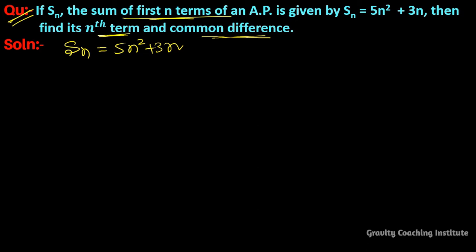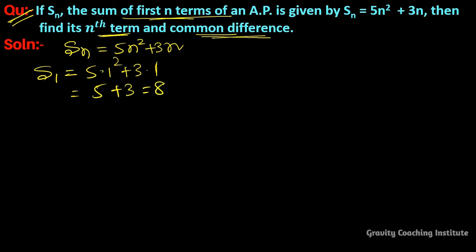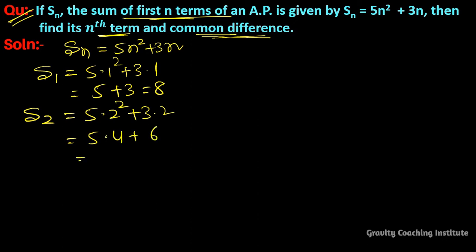Since Sn is given, we will put n equal to 1: S1 equals 5 into 1 squared plus 3 into 1, so 5 plus 3 equals 8. Now we put n equal to 2: S2 equals 5 into 2 squared plus 3 into 2, which is 5 into 4 plus 6, equal to 20 plus 6, equal to 26.